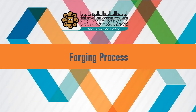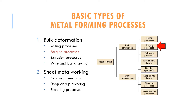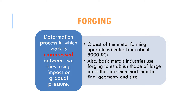Assalamualaikum. We are going to go into the next process, which is the forging process. In the bulk deformation process, we already covered the rolling process, and now we are going into forging — one of the four types of bulk deformation processes. The forging process is defined as a process where the work material is compressed between two dies, using either impact or gradual pressure. This is the oldest process in metal forming, dating back 50,000 years, and was originally used for producing swords and war equipment.